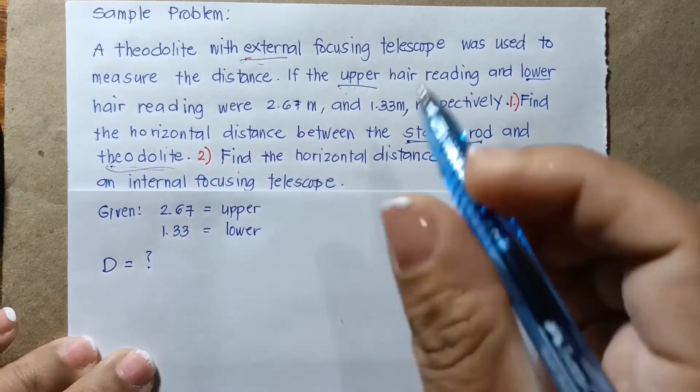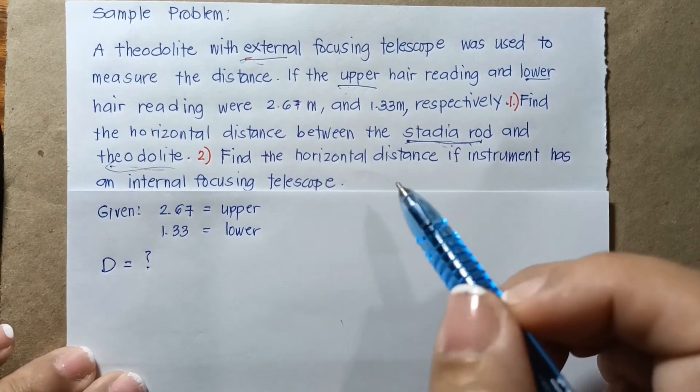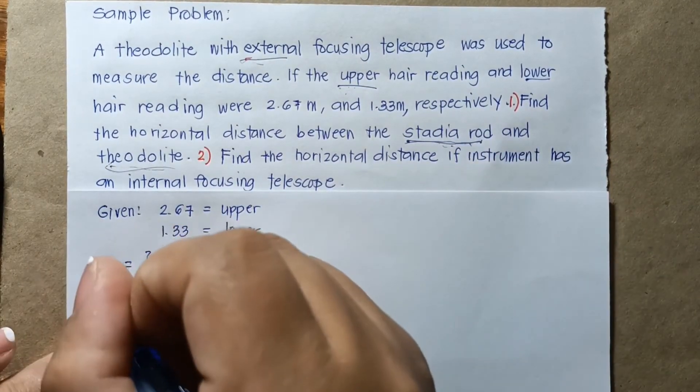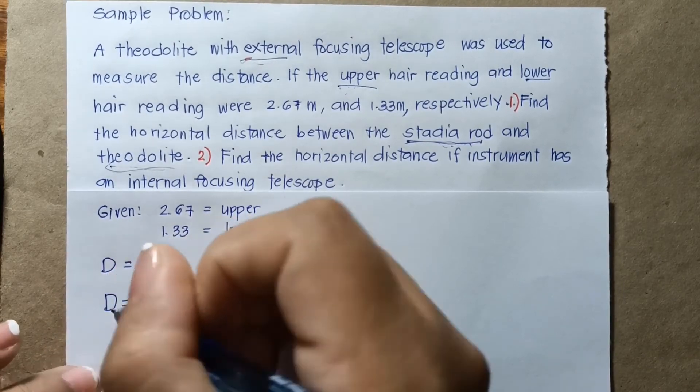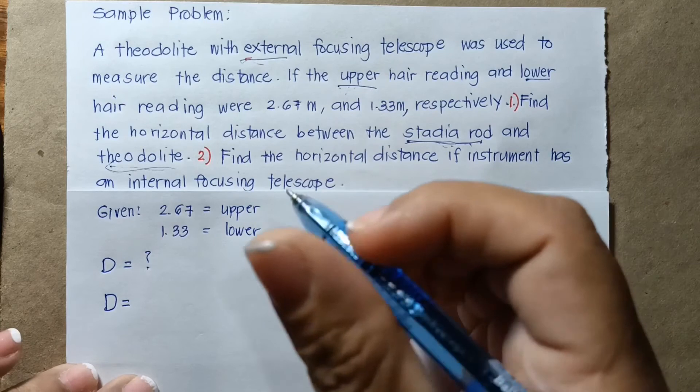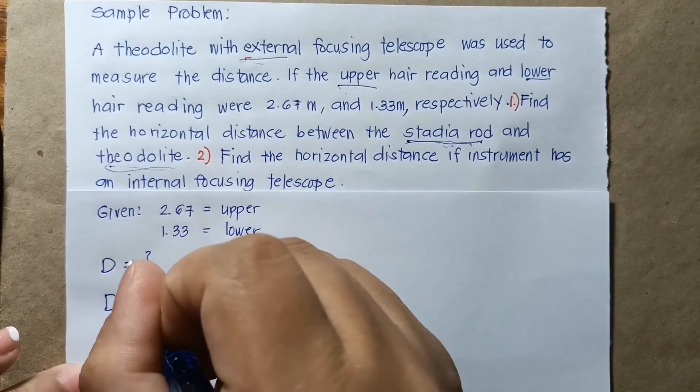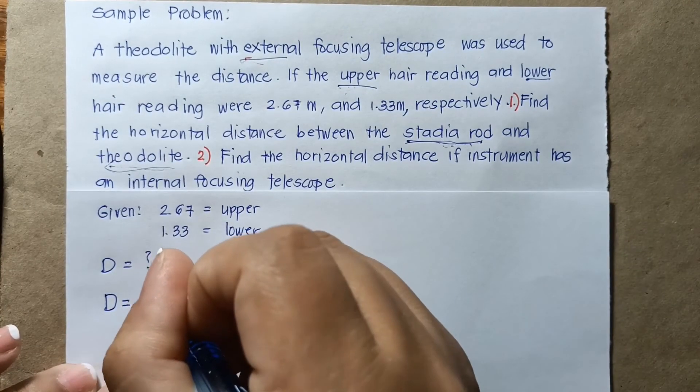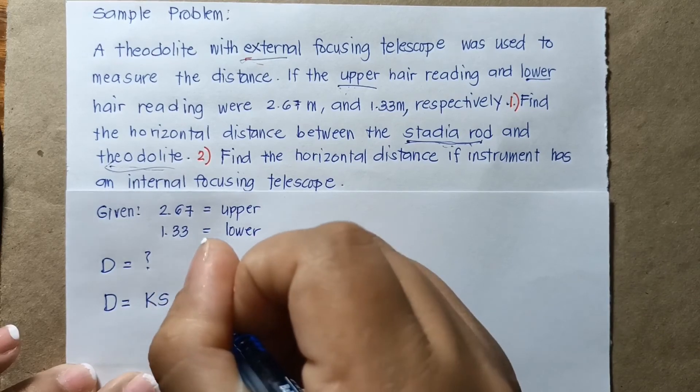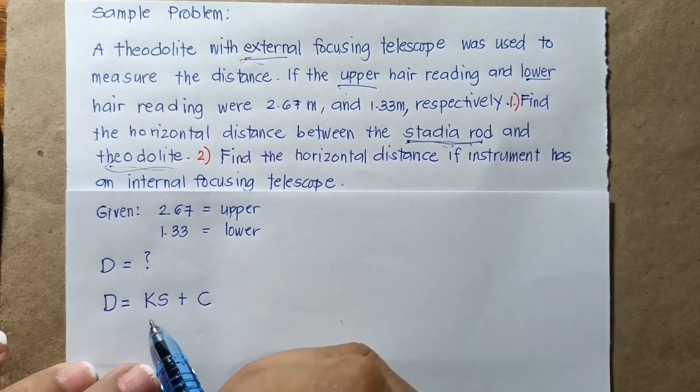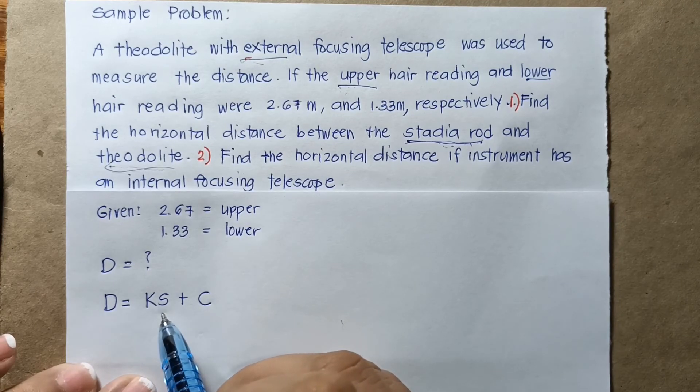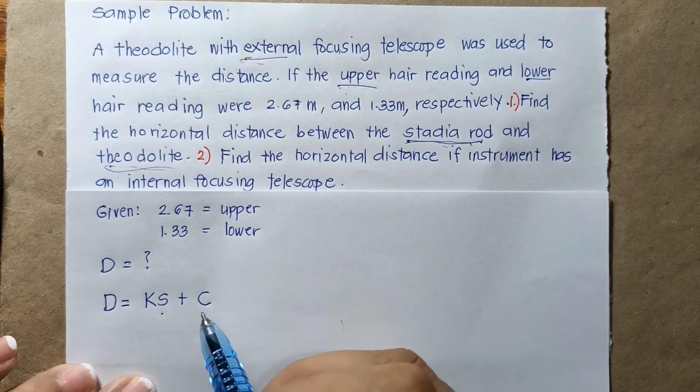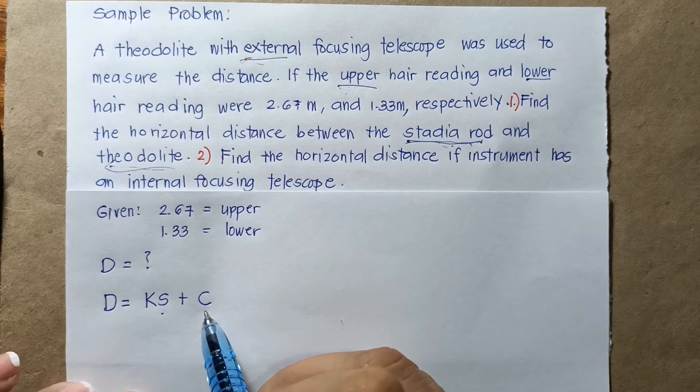So this is tachymetry by stadia rod. We will be using this formula which we discussed in our previous slide. We have D equals KS plus C, where K is the stadia rod interval factor, S is the stadia rod intercept, and C is the stadia rod constant.